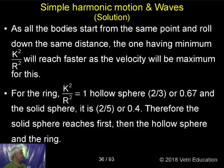The moment of inertia for the ring, k squared by r squared, is equal to 1. For solid sphere, k squared by r squared is equal to 2 by 5.